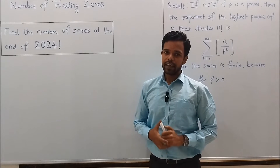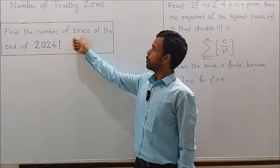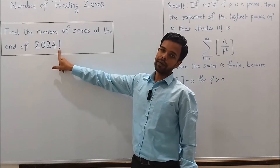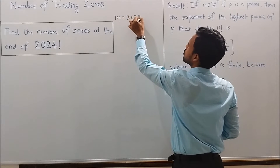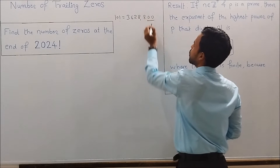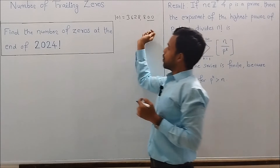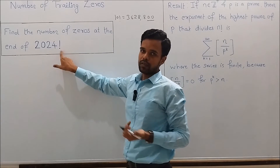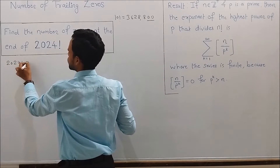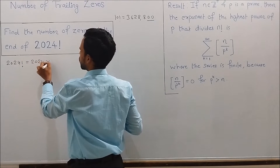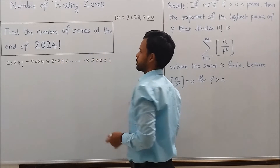Hello everyone, my name is Akash, and in today's video we will find the number of trailing zeros in 2024 factorial — that is, the number of zeros at the end of 2024 factorial. For example, 10 factorial ends with two zeros. Similarly, we have to find the number of zeros at the end of 2024 factorial. 2024 factorial can be written as the product 2024 × 2023 × ... × 3 × 2 × 1.